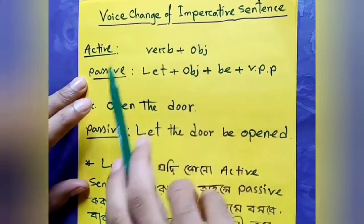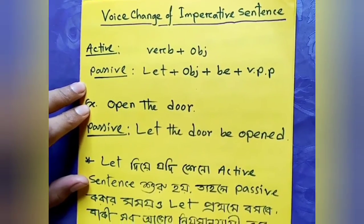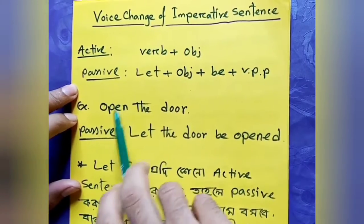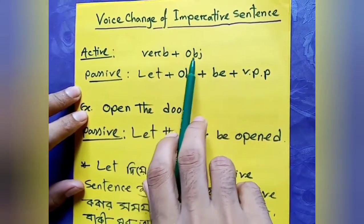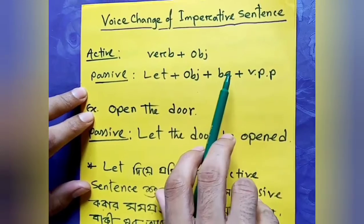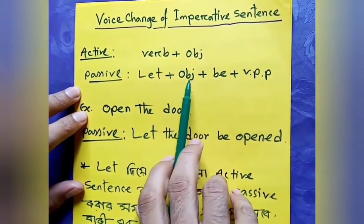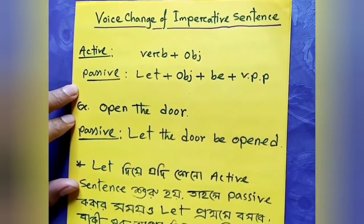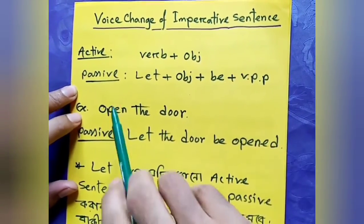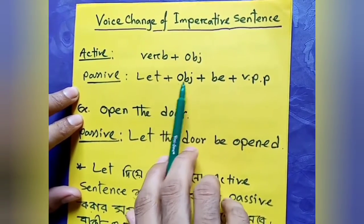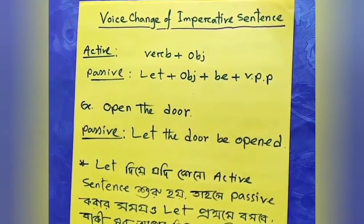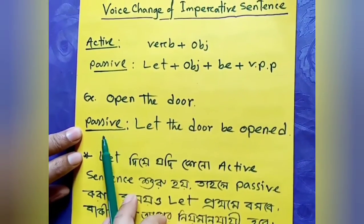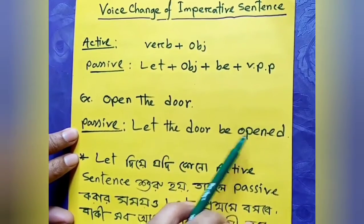Now, imperative sentence passive voice: the structure is always 'let + object + be + past participle.' For example, 'open the door' becomes 'let the door be opened.'